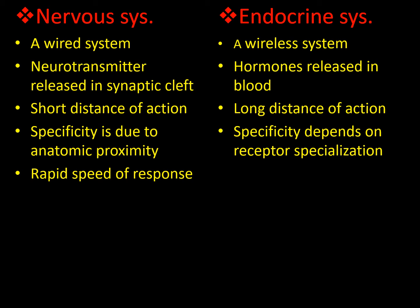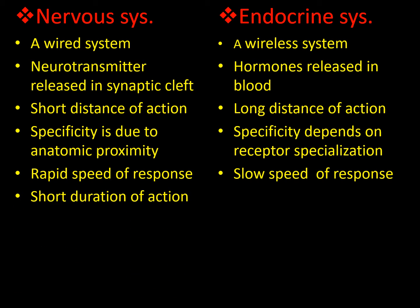Rapid speed of response is observed in the nervous system — the response elicited is very rapid. In comparison, the response of the endocrine system is a bit slower. The duration of action of the nervous system is short, within seconds to a maximum of two minutes, while the endocrine system can have long durations of action — minutes, hours, and even weeks and months.